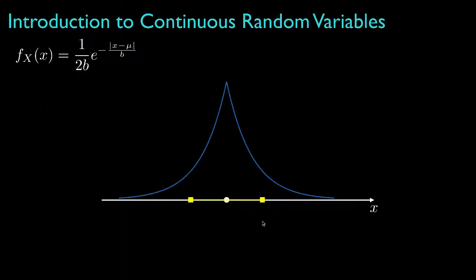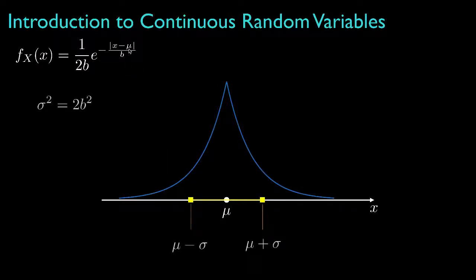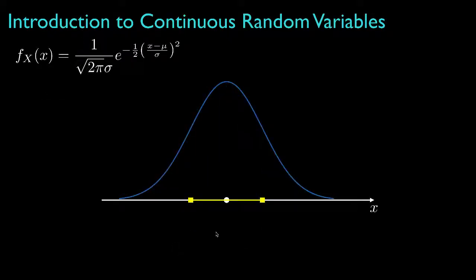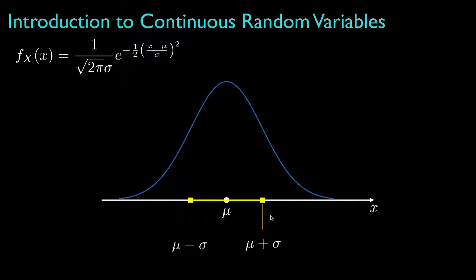A Laplacian distribution is a two-sided exponential distribution where the parameter mu is the mean, and the parameter b determines the variance, corresponding to a spread of plus or minus one standard deviation about the mean shown here. One of the most important distributions is the Gaussian, or normal distribution, which is parameterized by two parameters mu and sigma, which, as might be expected, correspond to the mean and the standard deviation, with a spread about the mean shown here. These are some of the most commonly used distributions, but many more are possible, and the way we use these distributions is always the same.